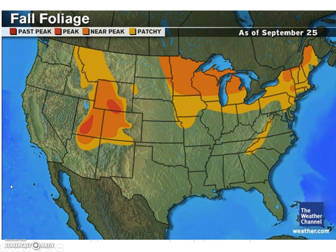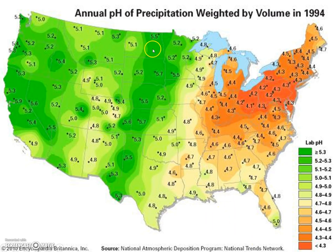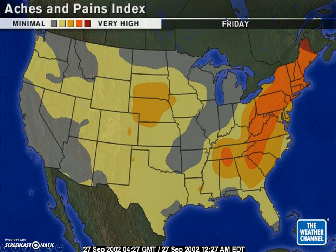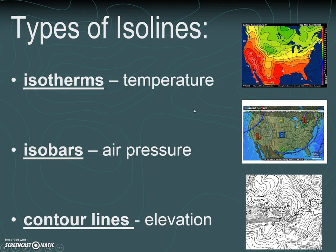This map shows us fall foliage — all the places along a given line are going to have the same amount of foliage. We could look at the pH or the amount of acidity of precipitation, and all of the points on a given line have the same amount of acid in their precipitation. There's also a map for people with arthritis that tells you how much achiness you might have on a given day — people living anywhere on the edge of a section would be expected to have the same amount of achiness. So those are all iso lines.